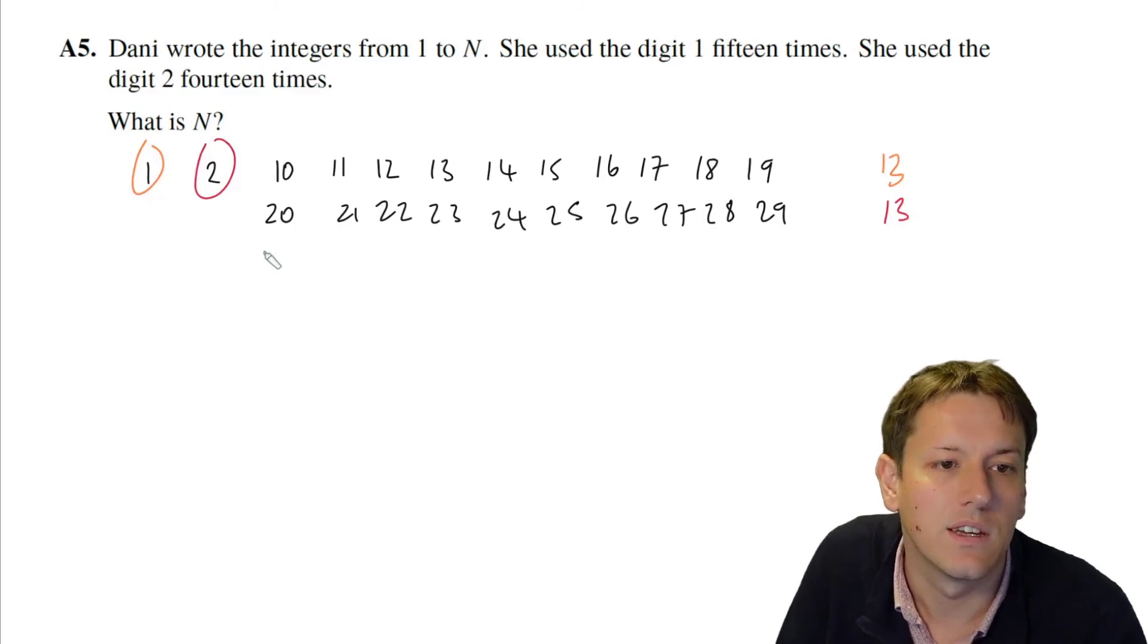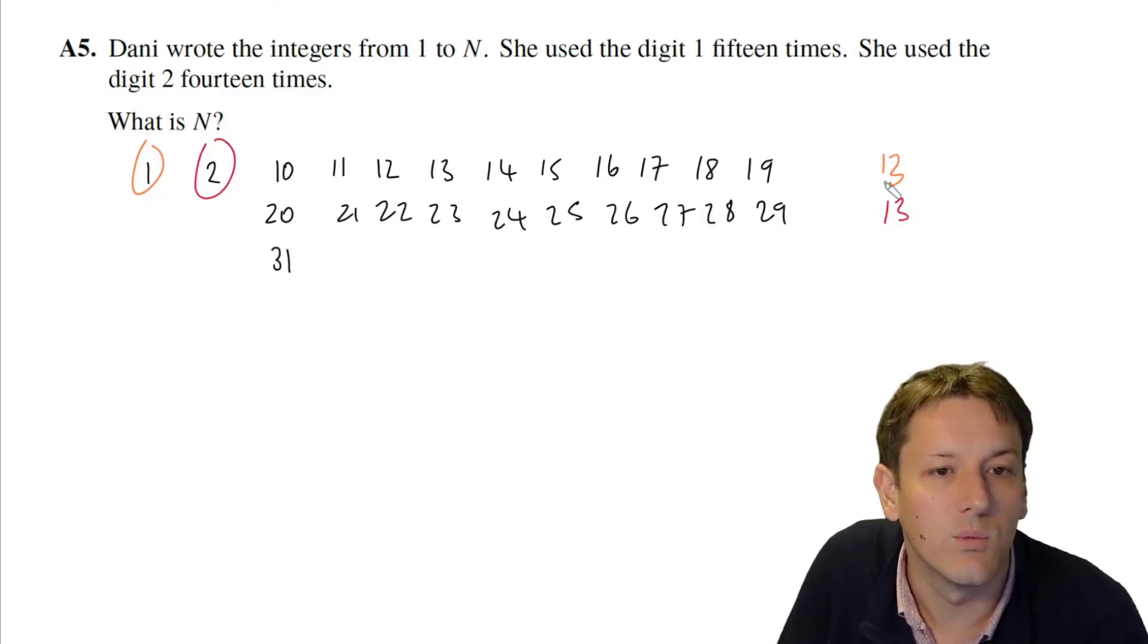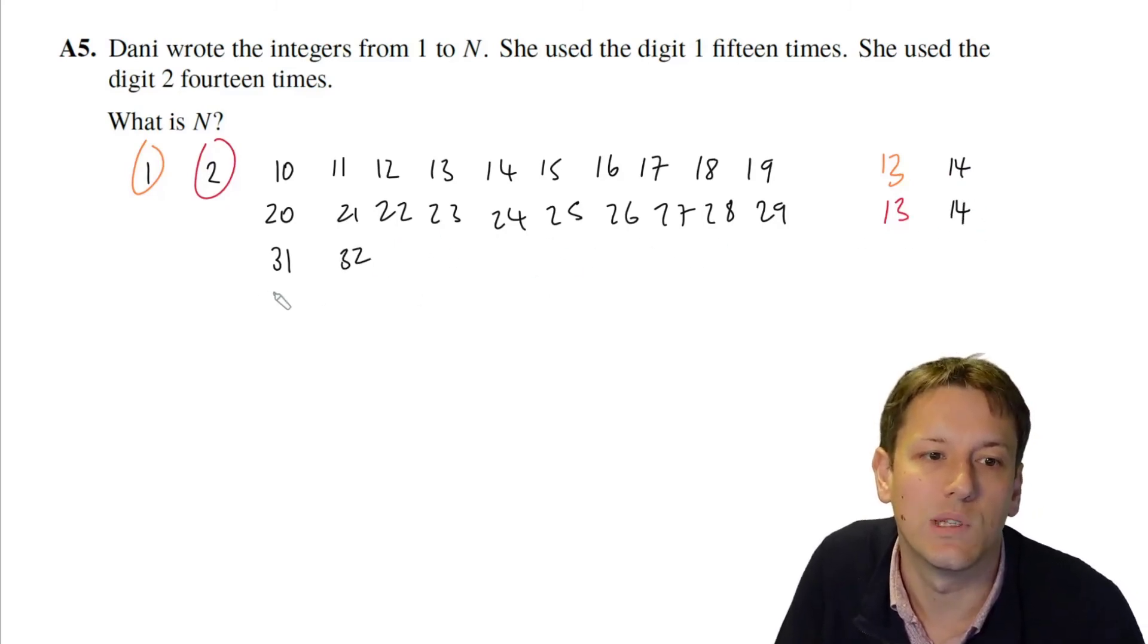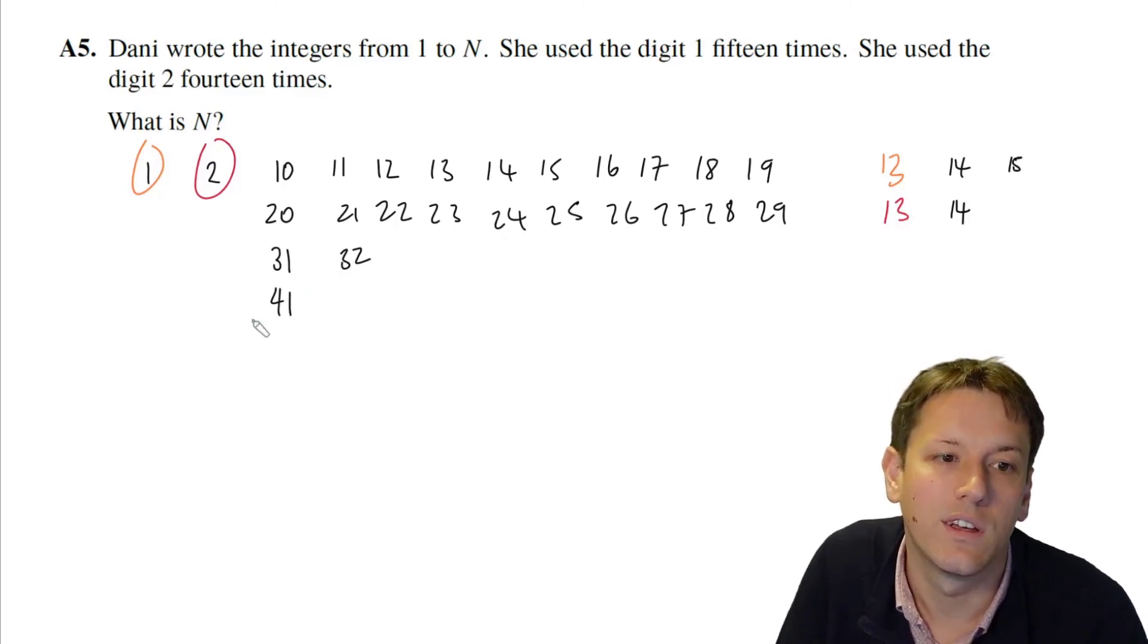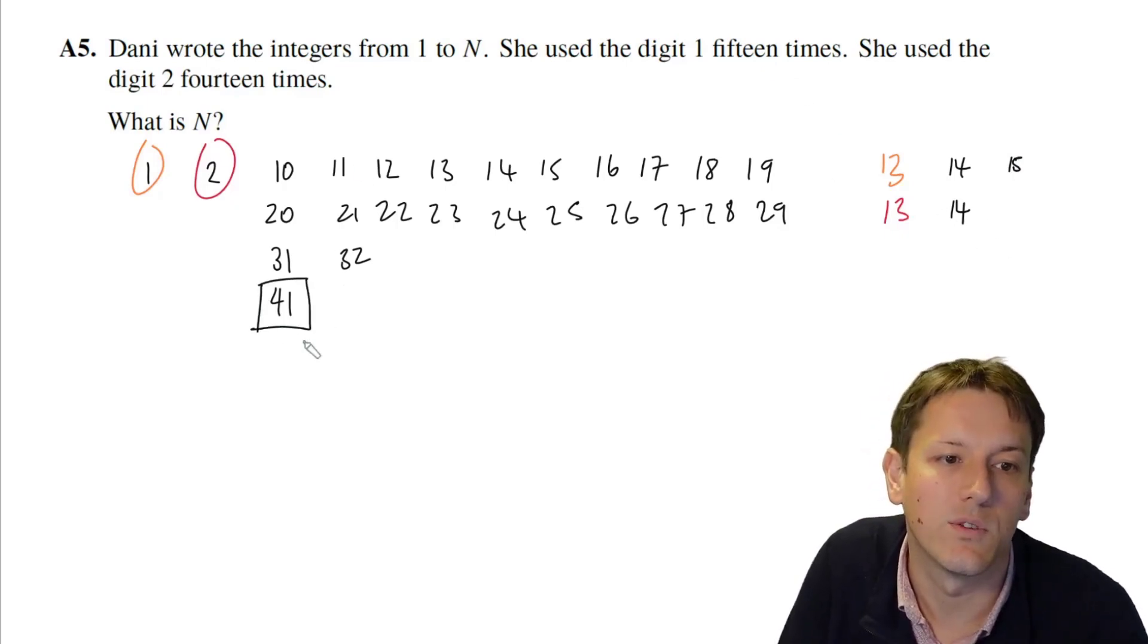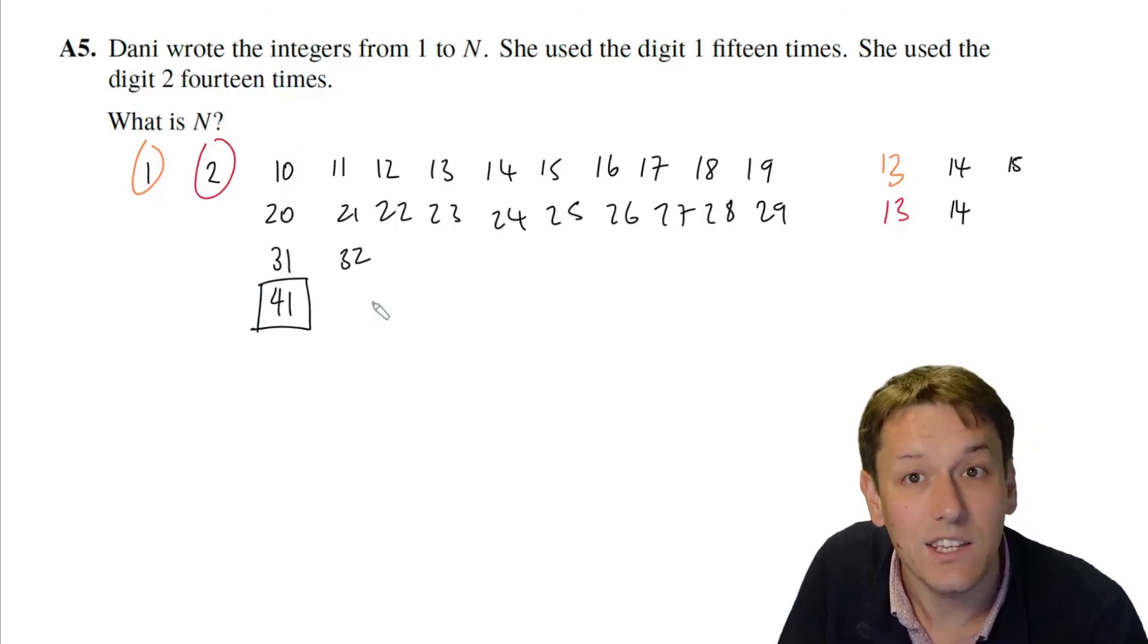So if I keep going, 30 we don't need to include. 31 takes us up to 14 ones, 32 takes us up to 14 twos and no more ones and twos until I get to 41. And that gets me to the 15th one. So at that point I've used 15 ones and 14 twos, and so the answer must be 41. If we went any further, if we went to 42, we'd use an extra two, so it can't be 42. The answer must be 41.